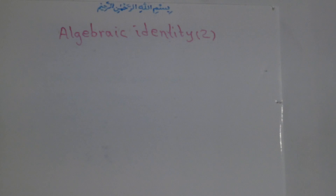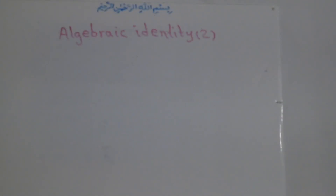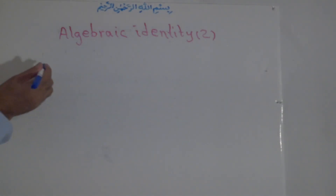We should memorize all the identities, because you cannot learn all the identities in one day. There are a lot of identities. I will show you one by one. This is Algebraic Identity number two.